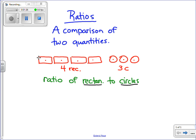We're going to write it in the same order that they ask. So I know that for my rectangles, there are four. For circles, there are three.